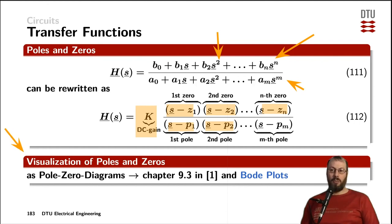There are two very commonly used ways of visualizing transfer functions. One way is as a pole zero diagram, as you can see in the textbook in Chapter 9.3. And the other way are the Bode plots that we are going to look into later in the course.